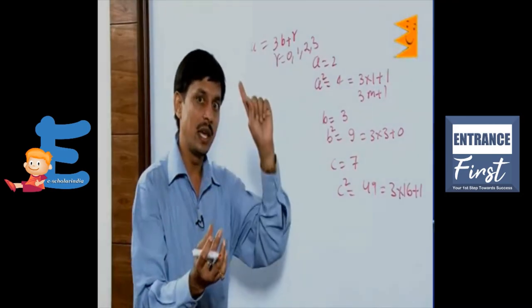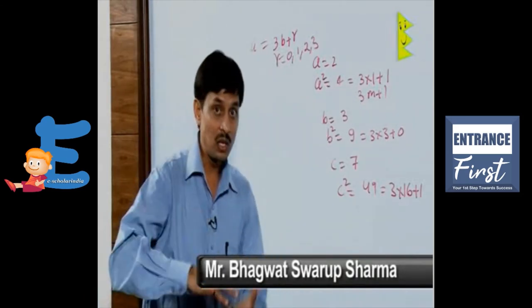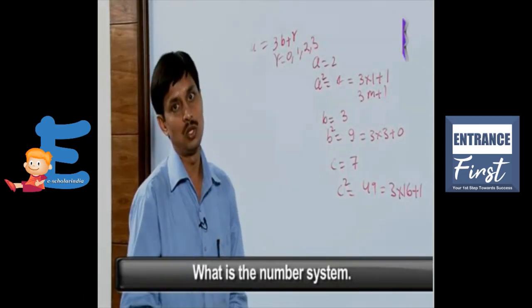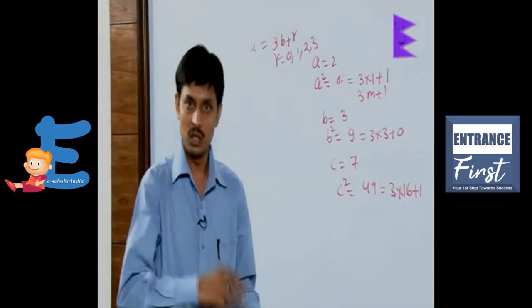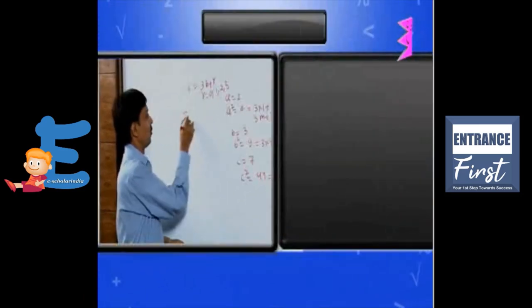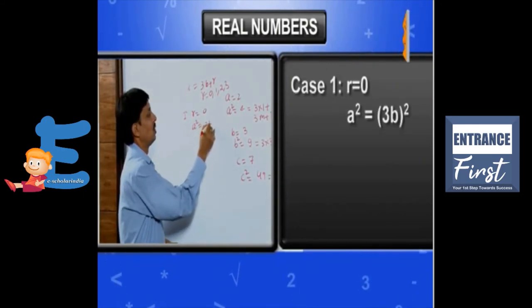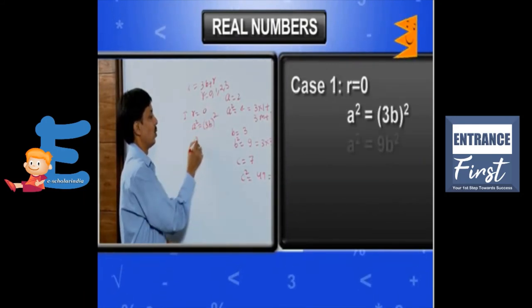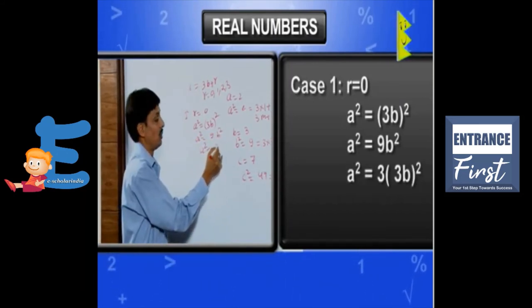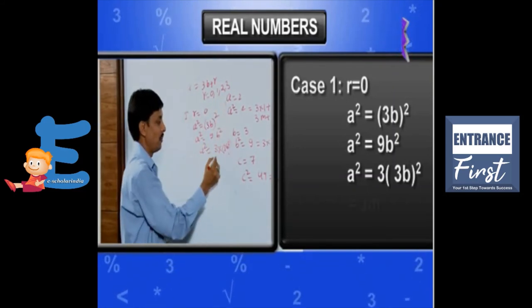Now we will take cases to find the squares of numbers and check whether the square of all these numbers is in the form of 3M or 3M plus 1. For Case 1, R equals 0, so A equals 3B. Then A squared equals 9B squared, which equals 3 into 3B squared. This is clearly of the form 3M.